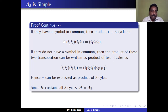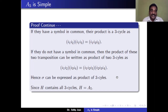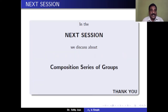Therefore every σ in A5 can be written as a product of 3-cycles, which are all elements of H. Hence σ belongs to H, so A5 ⊆ H and H = A5. We have proved that if H is a normal subgroup of A5, then H is either the trivial subgroup or H equals A5. Hence A5 is a simple group. In the next session we discuss about composition series of groups.